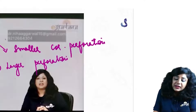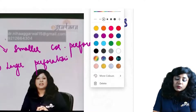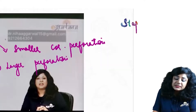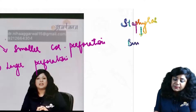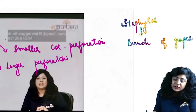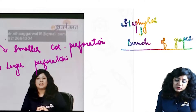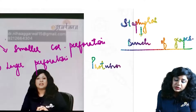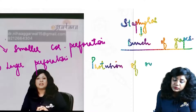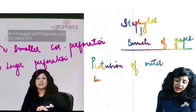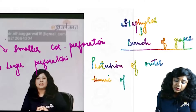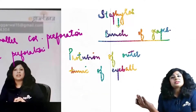What do we mean by staphyloma? The word staphyloma is formed from the word 'staphylos,' which means a bunch of grapes appearance. So it is actually the protrusion of the outer tunic of the eyeball — the outer tunic being either the cornea or the sclera.